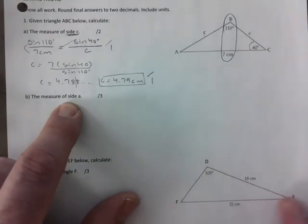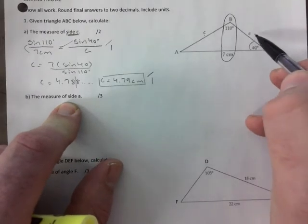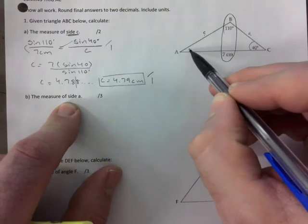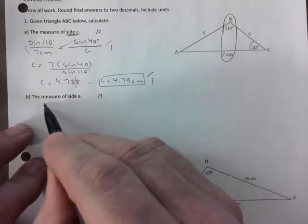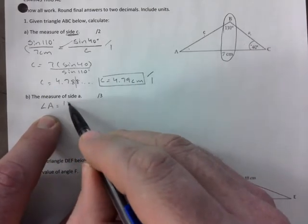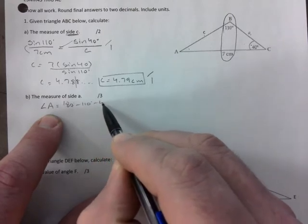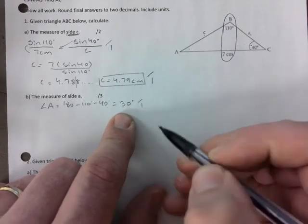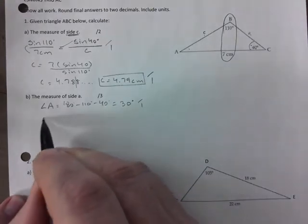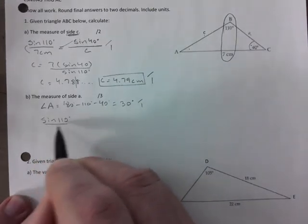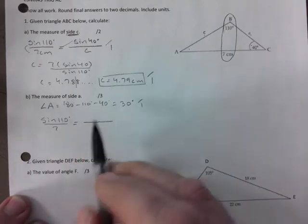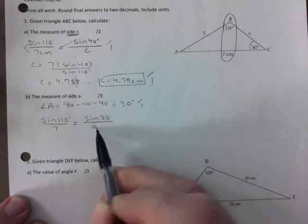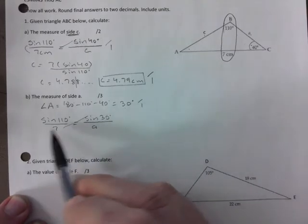Part b, calculate side a. You're looking at the triangle. Side a, I need the angle across from it which at first glance I don't have, but I do have two angles. So first let's find that angle across from it. Angle A equals 180 minus 110 minus 40 equals 30 degrees. You get one mark for doing that before you start solving. Now I'm going to start with the same pair but use sine of 30 because that's the angle across the side I'm interested in.